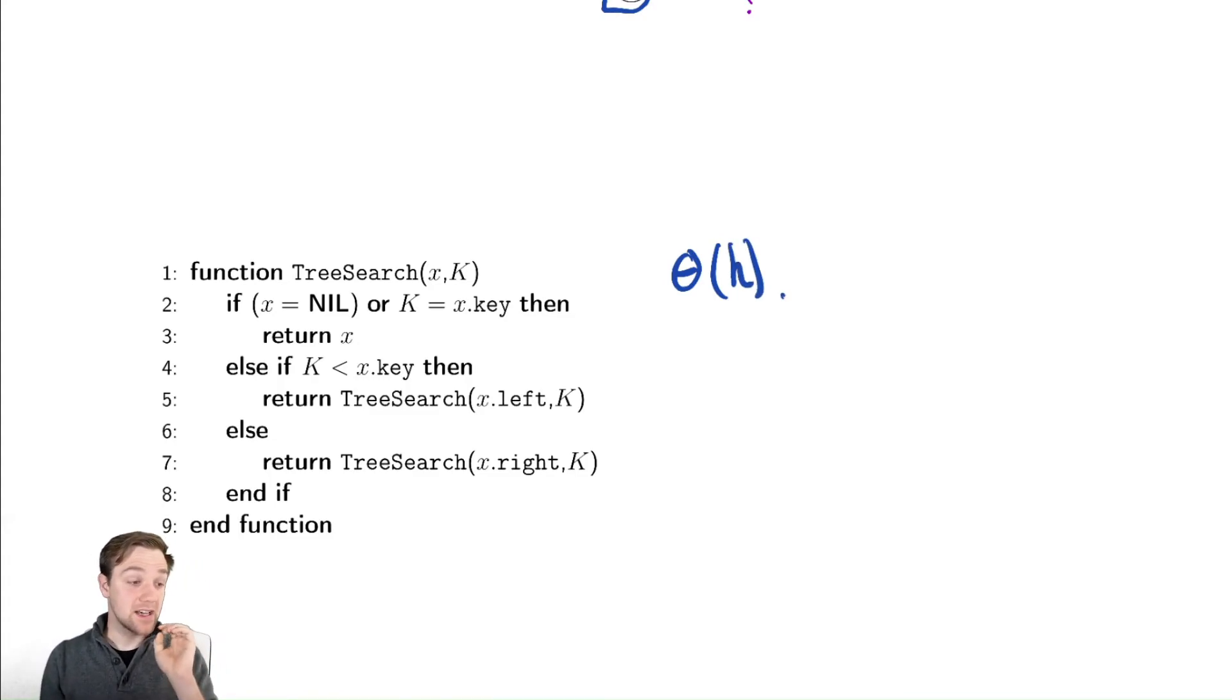Notice that is the height. That is not log of n. The height can be anything, anything at all between log of n and n. And there's a whole collection of values that could be between there, asymptotically.